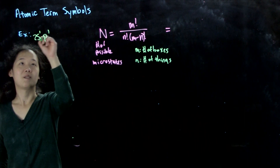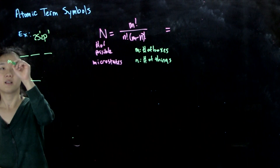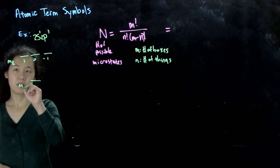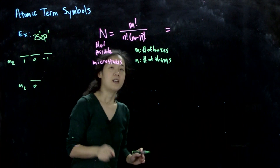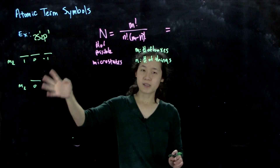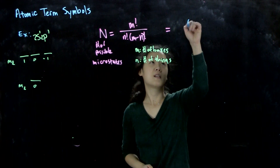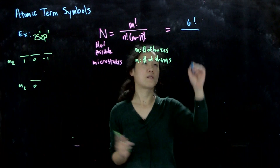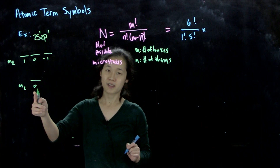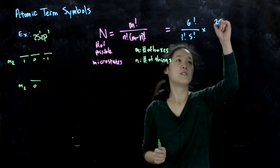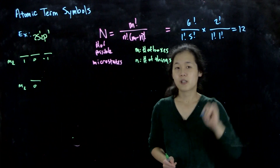The p electron goes in orbitals m_L = 1, 0, minus 1, and the s electron has m_L = 0. We want to count microstates. For the p part: 6 boxes (3 orbitals × up/down) with 1 electron gives 6!/(1! × 5!) = 6. For the s part: 2 boxes with 1 electron gives 2!/(1! × 1!) = 2. Multiplying: 6 times 2 equals 12 microstates.